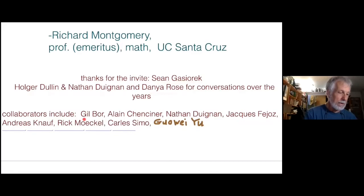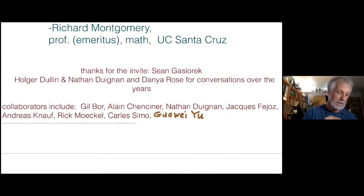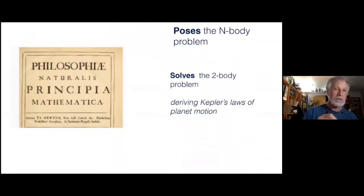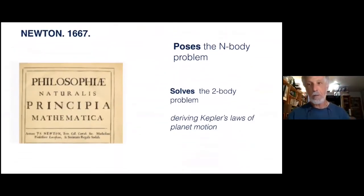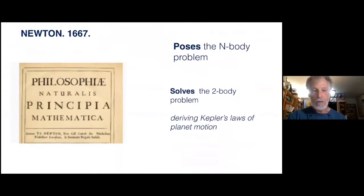And collaborators include, well, the collaborators for the work I'm going to be talking about are Nathan Duignan, who was a student of Holger, Jacques Fejoz, Andreas Knauf, Rick Moeckel, Carlos Simo. And over the years, Alain Chenciner and Gil Bor have been essential to me continuing.